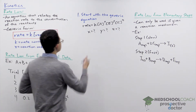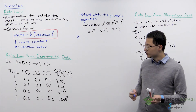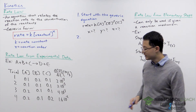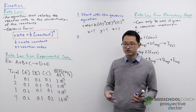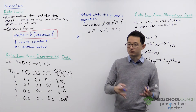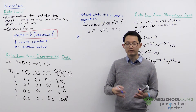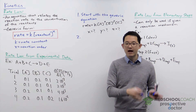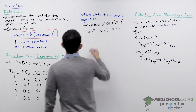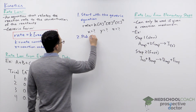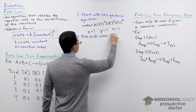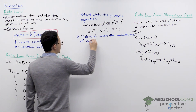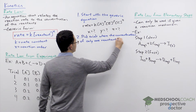The next step is to look at your rate data. The strategy is to figure out the exponents X, Y, and Z one at a time. You do that by picking two trials where the concentration of all the reactants stays the same except one, so that any change in reaction rate is due solely to that one reactant.